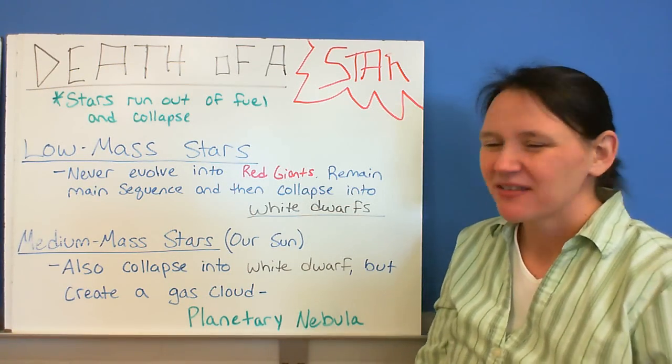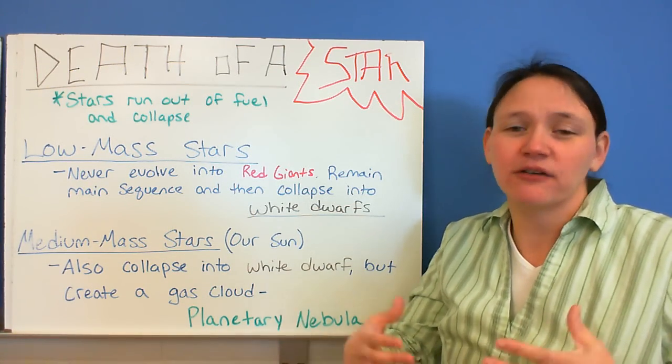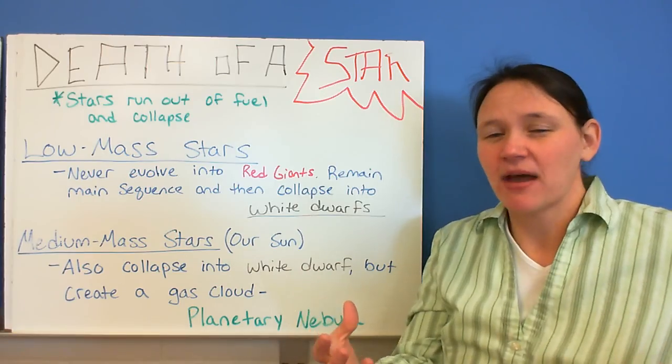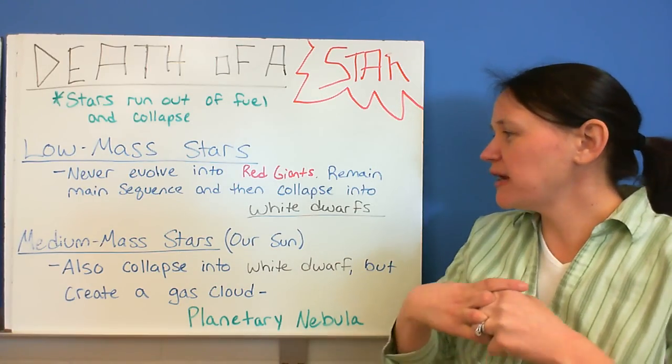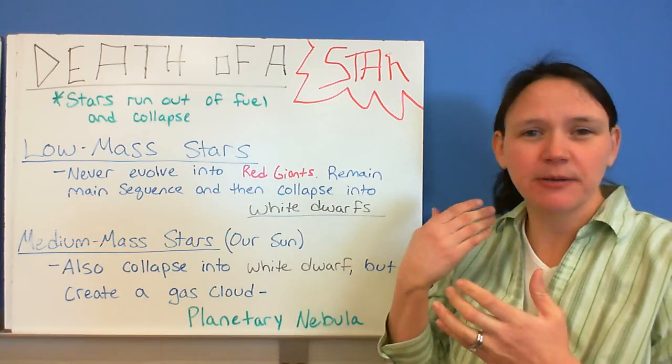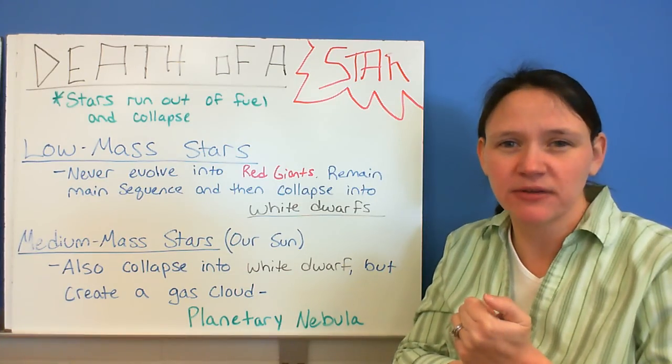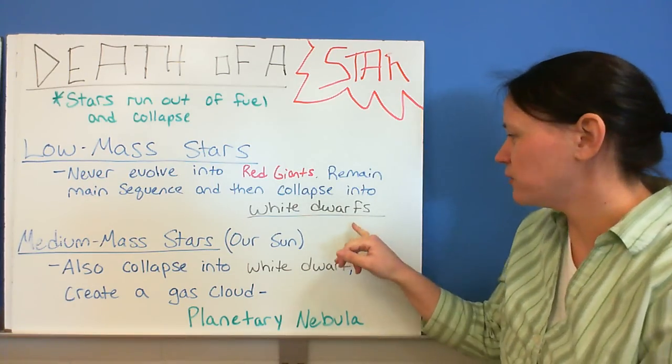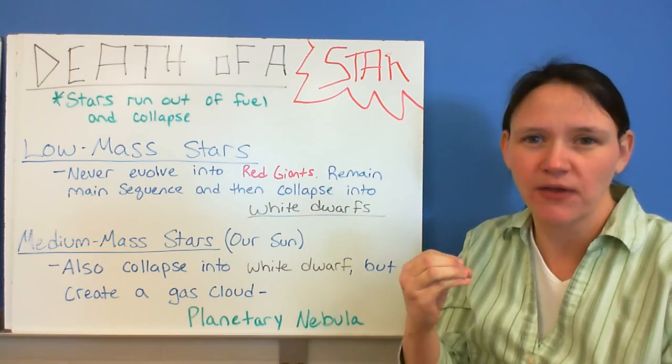Low mass stars, they don't even make it into the red giant or giant phase, because they didn't have that much matter to start with. So they just pretty much collapse right after the main sequence stage, and you end up with a white dwarf. So it's a very small, dense star.